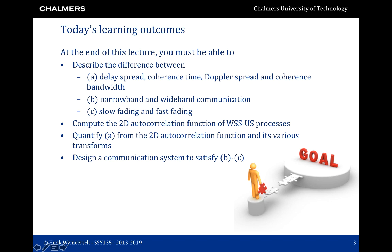You should understand the difference between narrowband and wideband communication, and between slow fading and fast fading. You should be able to compute the 2D autocorrelation function of wide-sense stationary uncorrelated scattering processes and quantify the four main properties of channels from those 2D autocorrelation functions and their transforms. Finally, you should be able to design communication systems that are narrowband or wideband, or operating under slow or fast fading.